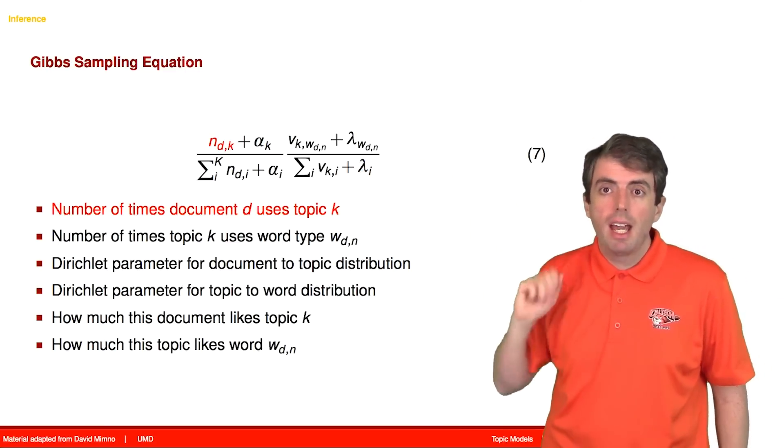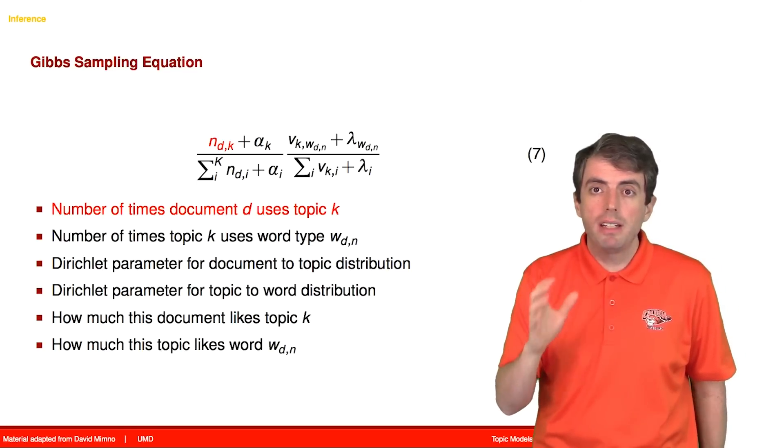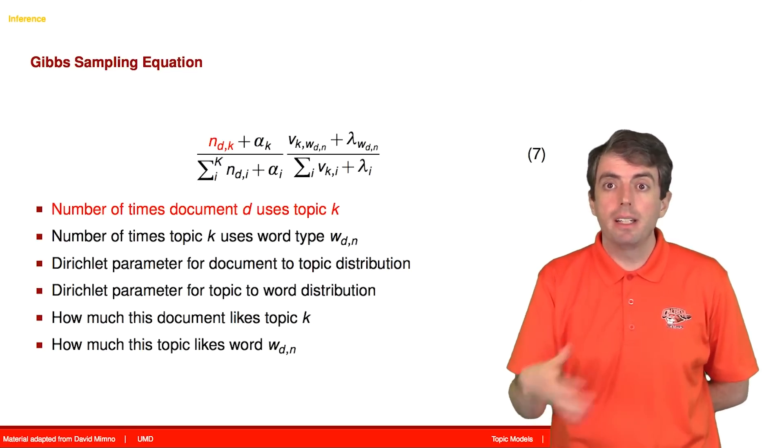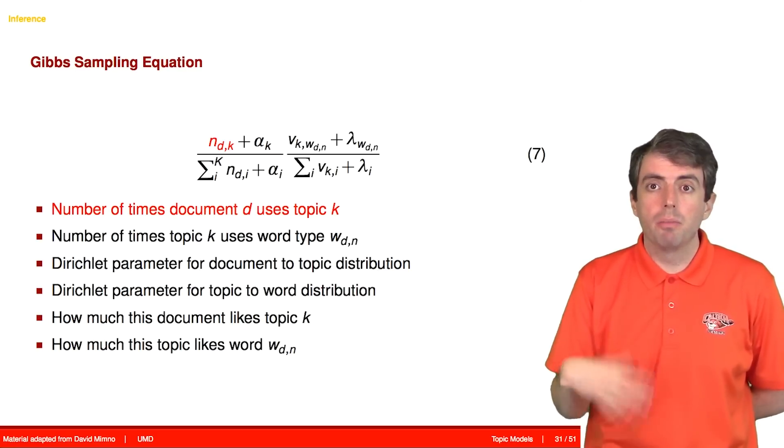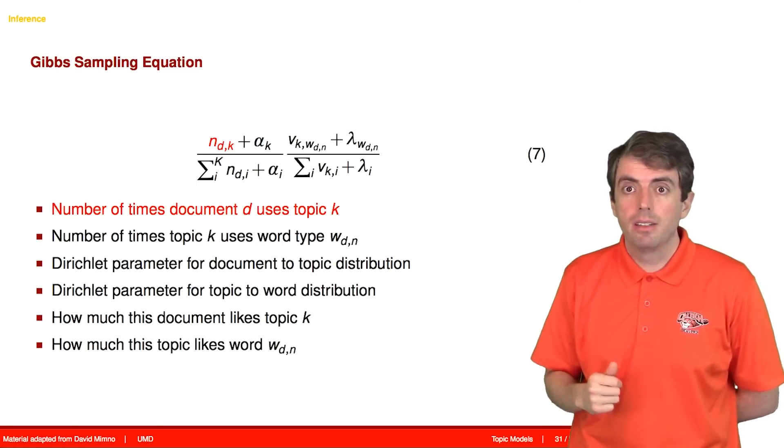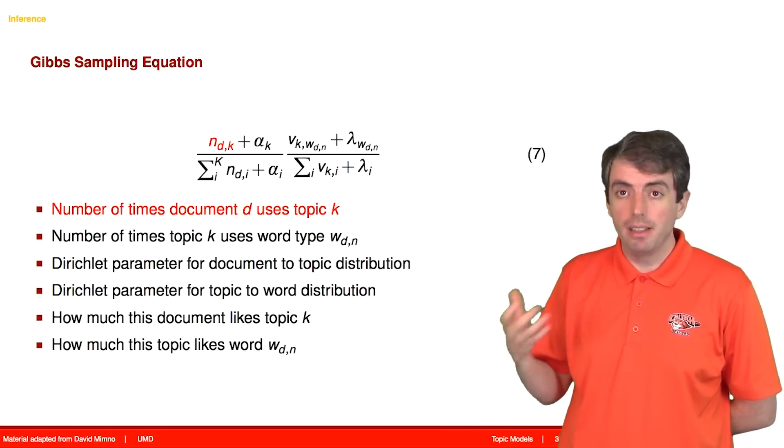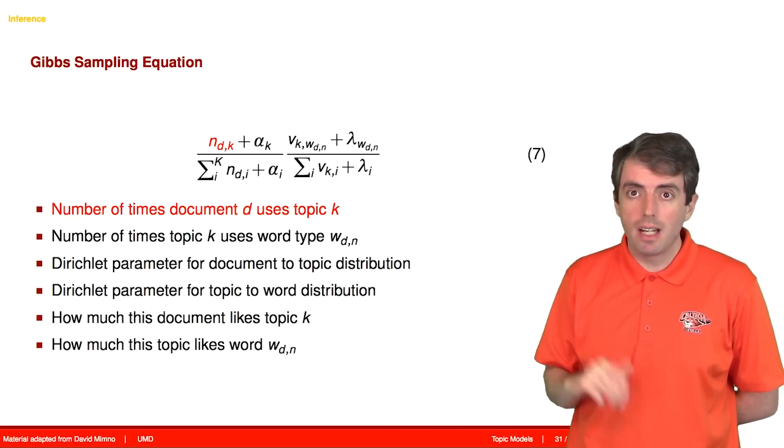So the first term has how many times this document has already used this topic. So the more that a document uses the topic, the more that it's likely to continue using this topic. So if it has used this topic a lot, you're going to see more of this topic in the future.